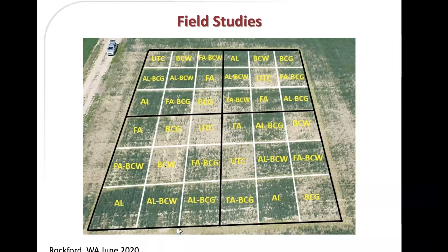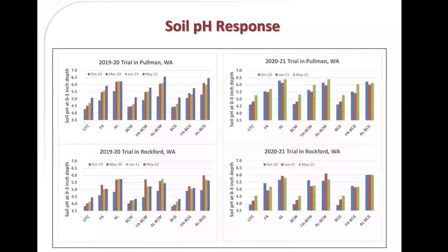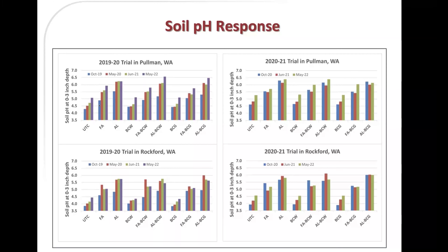The biochar treatments show a stand very comparable to the untreated control. When we looked at soil pH at the zero-to-three-inch depth, with Pullman plots across the top and Rockford plots across the bottom, wherever we added fly ash or ag lime, we increased soil pH across sampling times from October 2019 through May 2022. Biochar by itself did not result in a significant increase in soil pH.